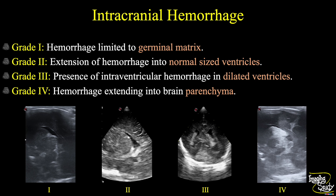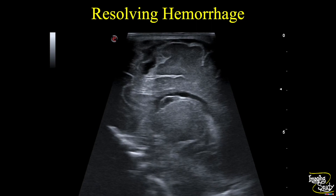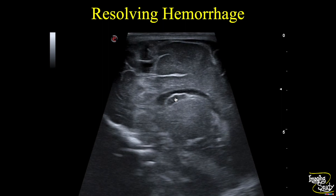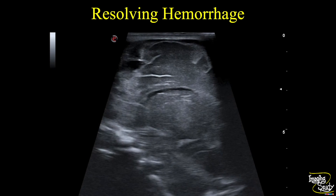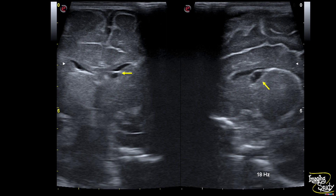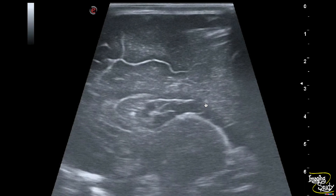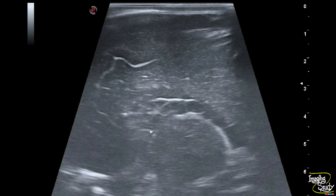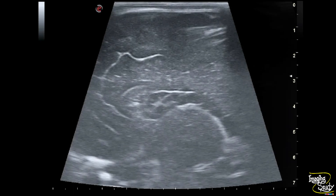To summarize the four grades: grade 1 hemorrhage is limited to the germinal matrix; grade 2 extends to normal-size ventricles; grade 3 shows dilated ventricles; and grade 4 has hemorrhage extending to the brain parenchyma. When these echogenic blood clots get resolved, here is a picture of a resolving hematoma — you see an anechoic cystic structure with a thick echogenic wall at the chordothalamic groove, slightly elongated unlike a choroid plexus cyst. Here is another case showing a multiseptate elongated cystic area at the chordothalamic groove extending to the lateral ventricle — this is the resolving hematoma of the patient previously shown as grade 2 intracranial hemorrhage.